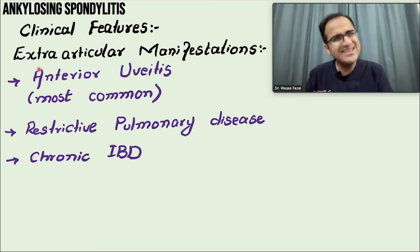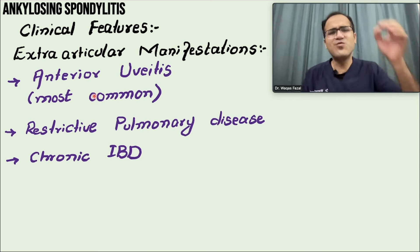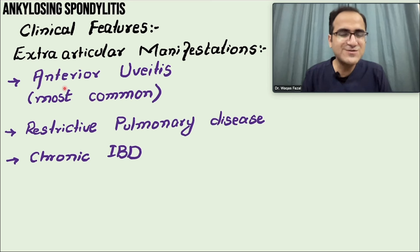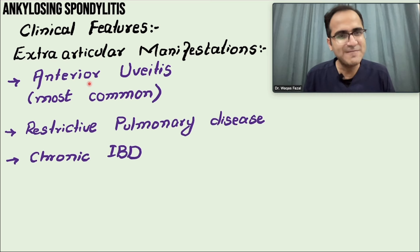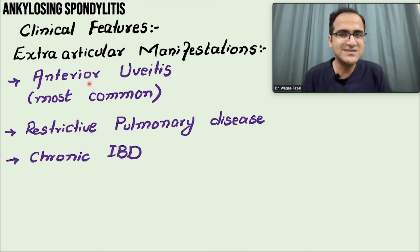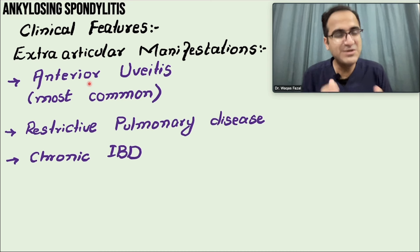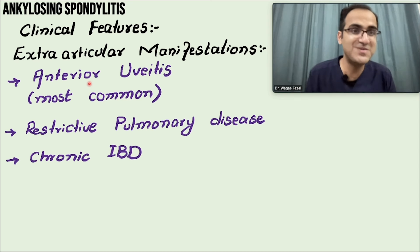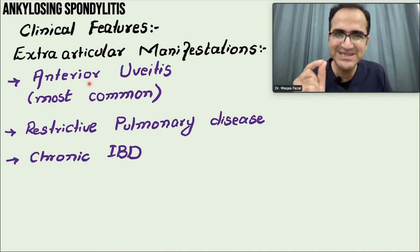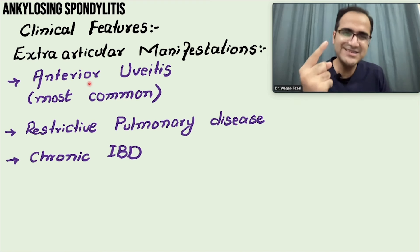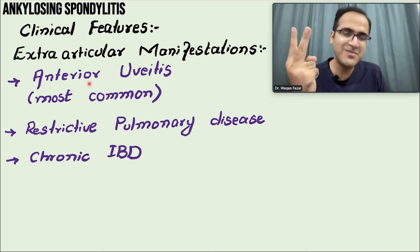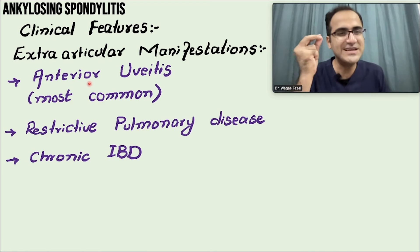There are important extra-articular manifestations. Anterior uveitis is very high yield. In exams, they often give a vague scenario of a young person with back pain that improves with exercise, but add a hint that the patient has eye inflammation being treated by the ophthalmology department - that is anterior uveitis. Anterior uveitis plus back pain in a young man is a classical exam scenario pointing to ankylosing spondylitis.